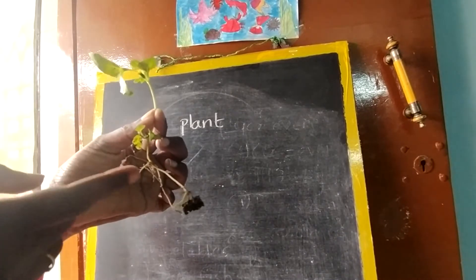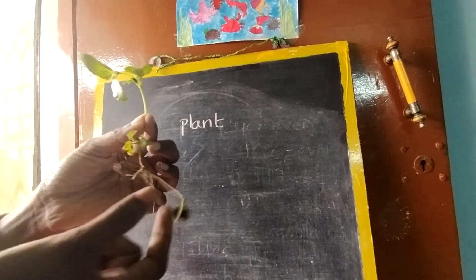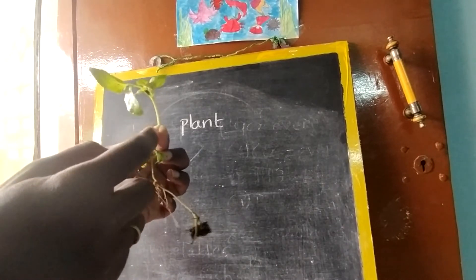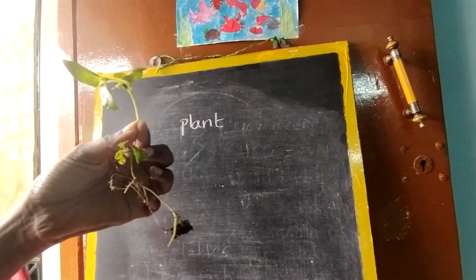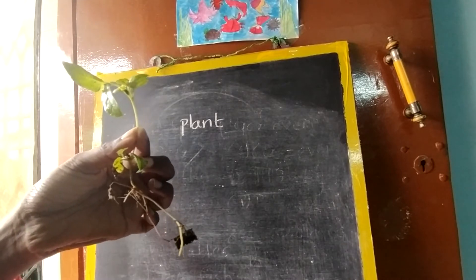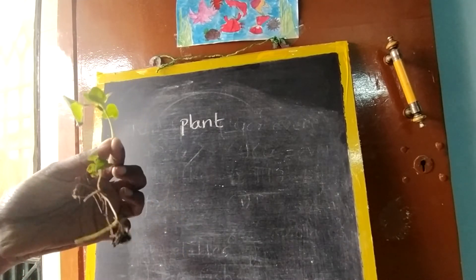So here, what all parts you can see? It is a root, it is a leaf, it is a stem and it is a flower. So these are all called as parts of a plant. So today our topic is parts of a plant.